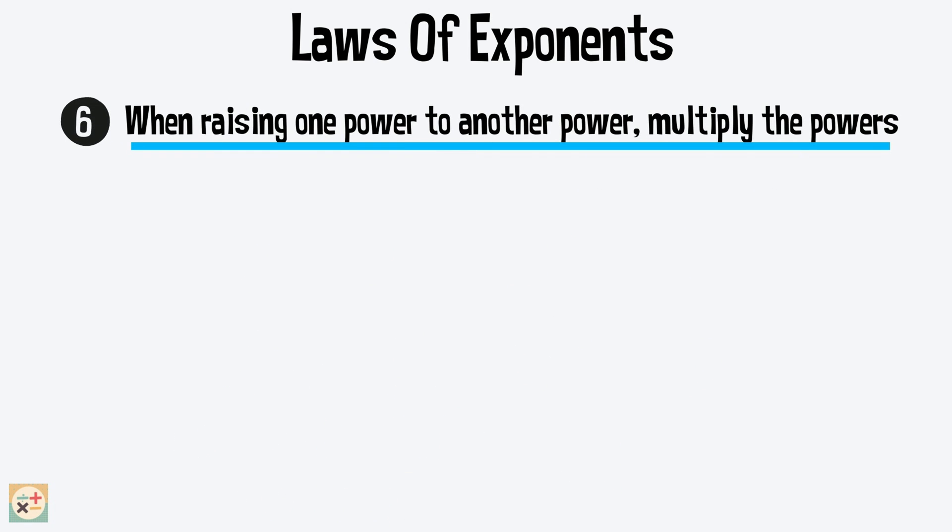Law number 6: When raising one power to another, multiply the powers. Here we have a power 2 raised to a power 3. So according to this rule, we can multiply the exponents 2 and 3 together. This gives us an answer to the sixth power.